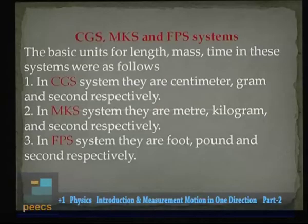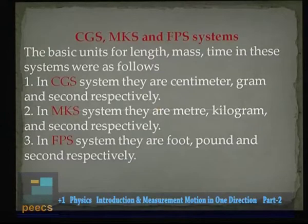There are different systems of units. The important ones are the CGS system, the MKS system, and the FPS system. In CGS, the units of length, mass, and time are centimeter, gram, and second respectively. In MKS: meter, kilogram, and second. In FPS: foot, pound, and second. Nowadays we use the International System of Units, known as SI units, and in SI there are 7 base quantities with corresponding units.